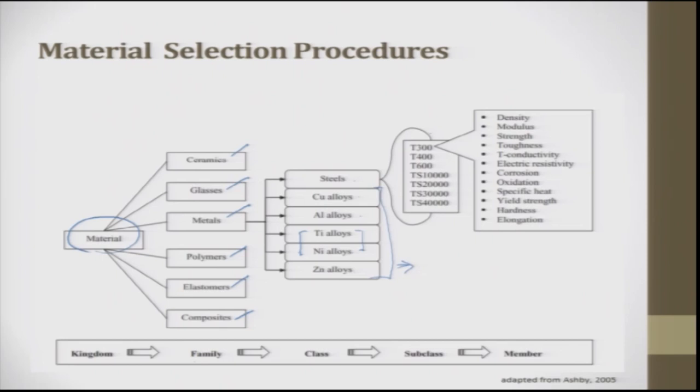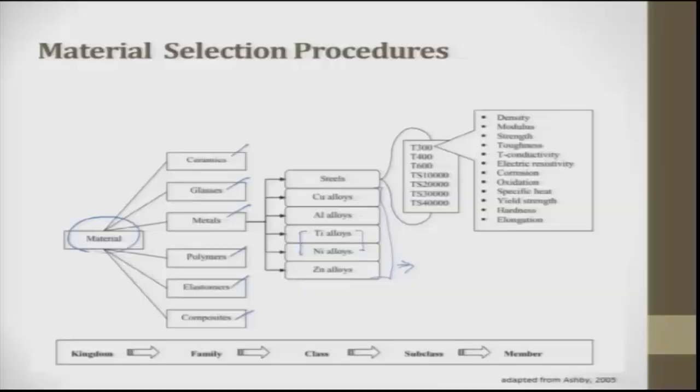Steel is further sub-classified — for example, T300, T400, T600, TS10000, TS20000, TS30000, TS40000 — nomenclature that relates to carbon content in the steel and certain properties. This is the class and subclass level. The members are properties such as thermal conductivity, electrical resistance, corrosion, oxidation, specific heat, yield strength, hardness, and elongation. These members are attached to subclass, subclass to class, class to family, and family to kingdom — an important grouping of materials.